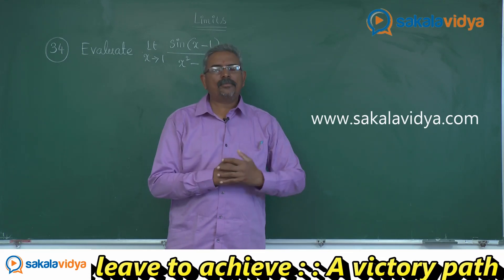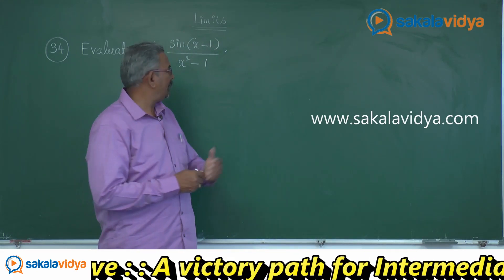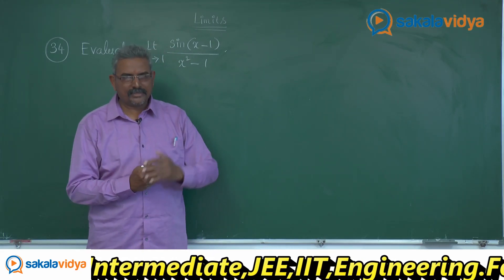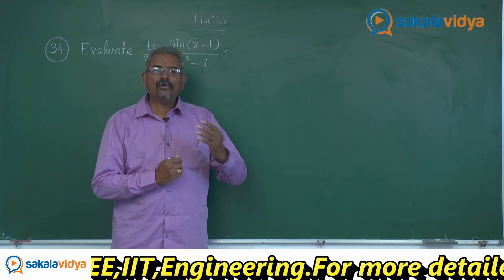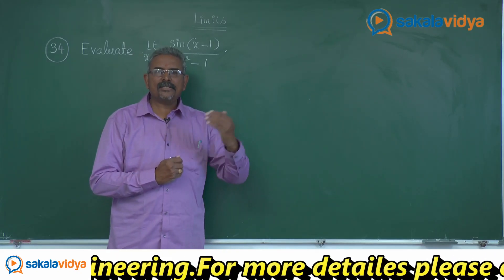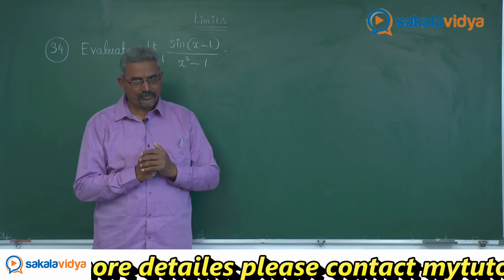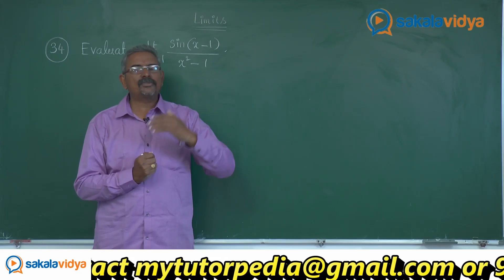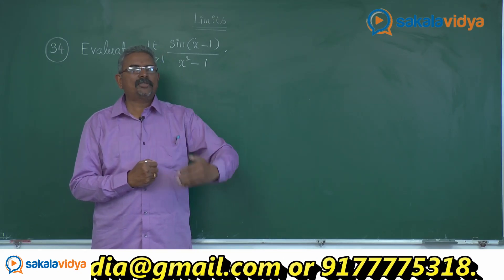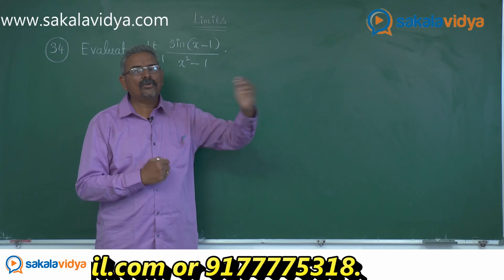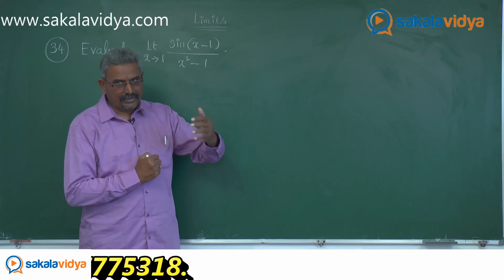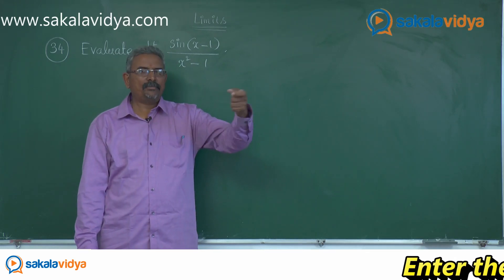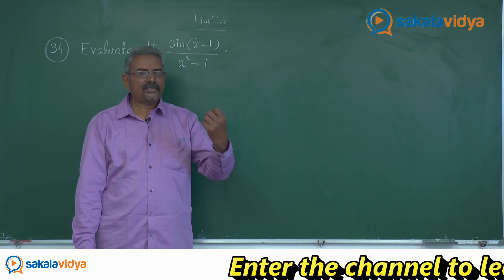Here in this problem, first let us simplify x squared minus 1. The x squared minus 1 can be written as (x+1)(x-1). As x tends to 1, x minus 1 also tends to 0. So this can be written as sin θ / θ where the limit θ tends to 0. The limit of sin θ / θ as θ tends to 0 is 1. We also have the factor 1/(x+1). As x approaches 1, that becomes 1/2, and 1/2 multiplied by 1 gives the answer 1/2.